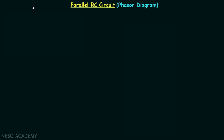In this presentation we are going to draw the phasor diagram of a parallel RC circuit, and once we have the phasor diagram, using that phasor diagram we can derive the current triangle, admittance triangle, and power triangle.